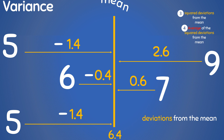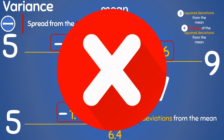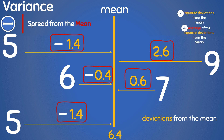Now we know the mean and the deviation of all the data points from the mean. Remember that variance is a measure of the spread of data from the mean, and we now have the individual spread of all the data points. However, the variance is actually a single number that represents the spread of all the data points from the mean, but here we have five numbers. So in order to get the variance, we need to combine all these five deviations into one number.